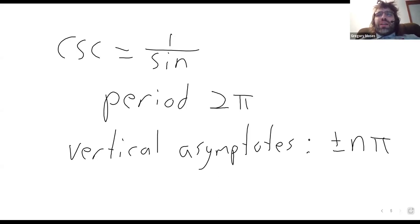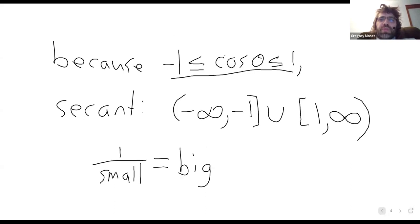Again, if you're paying careful attention, this should be a little familiar. These are the same vertical asymptotes that the cotangent has because the cotangent also has the sine in the denominator.